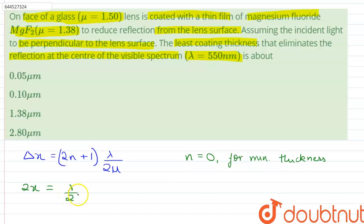Substituting all of the values, we can write that x = 550/(2 × 2 × 1.38) nanometers. On calculating this, we find out that x = 0.1 micrometers. Therefore, this is the thickness of the film.